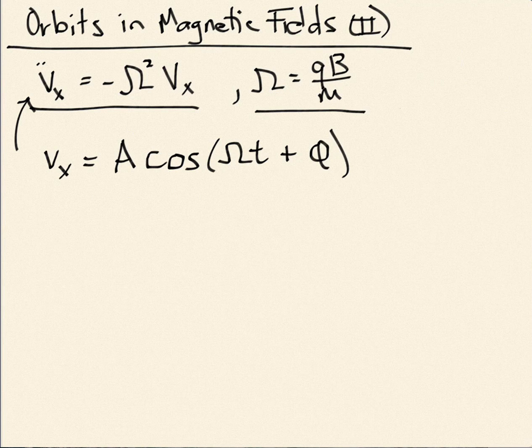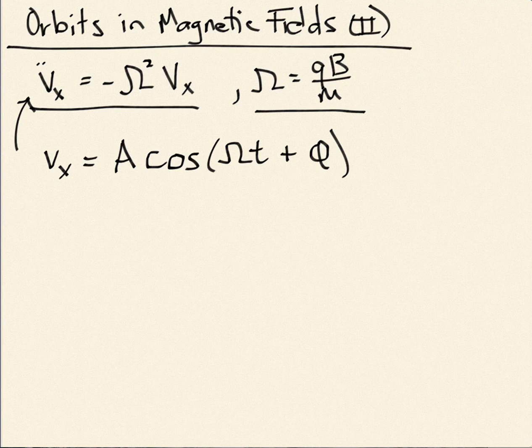I could also write it as A cosine omega t plus B sine omega t. That's a legitimate solution. I can do either one, but this one I find a more compact way to write it.